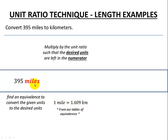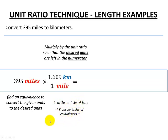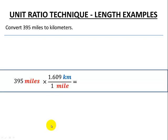We'll now multiply our original given value and units by the ratio such that the desired units are left in the numerator. This is where our unit ratio comes into play, because we can write this equivalence as two ratios: either one mile over 1.609 kilometers, or 1.609 kilometers over one mile. We need the kilometers on top and the miles on the bottom so that the miles will cancel out, leaving us with just kilometers.